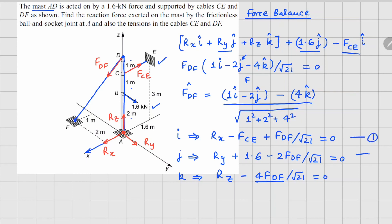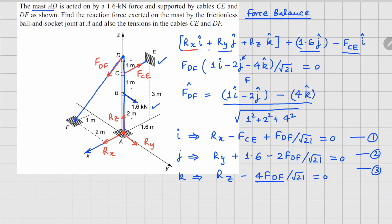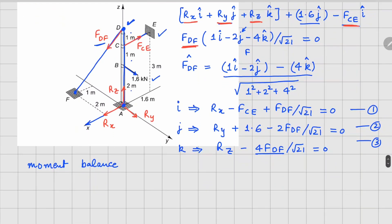We have three equations but five unknowns: Rx, Ry, Rz, F_CE, and F_DF. We need two more equations, so we perform a moment balance. We take moments about point D so that F_DF produces no moment, simplifying the calculation.